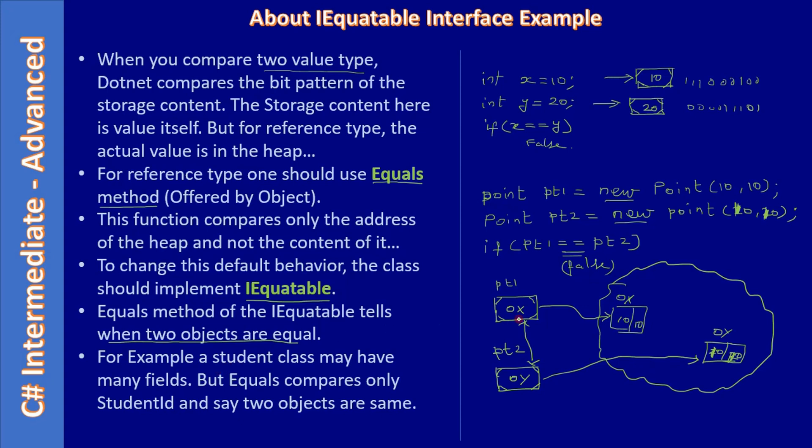For example, let's consider the Point class. Let's consider one more example of a Student class. The Student class may have many fields, but the Equals method - here we are overriding the Equals method. The Equals method compares only the student ID. So it's up to us to say when two students are equal. When student IDs are equal, then we can say two objects are the same.